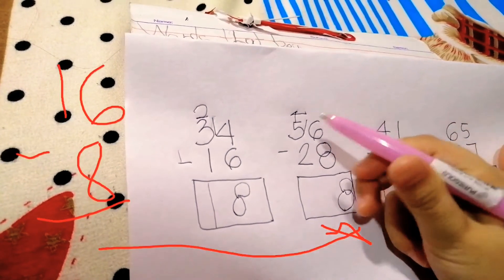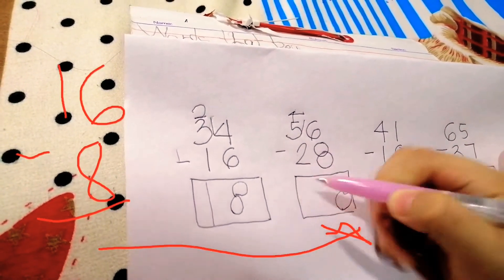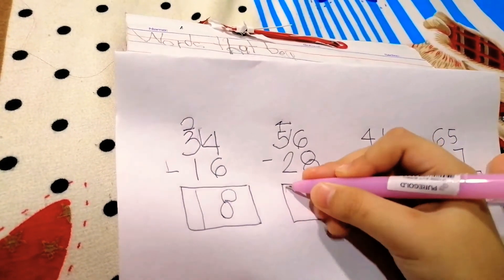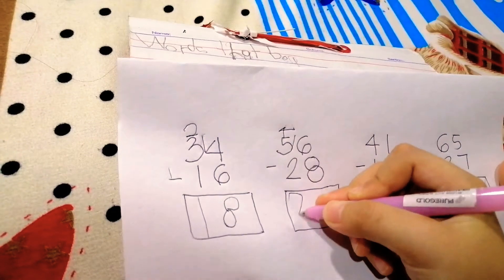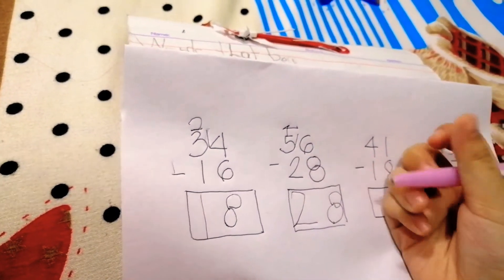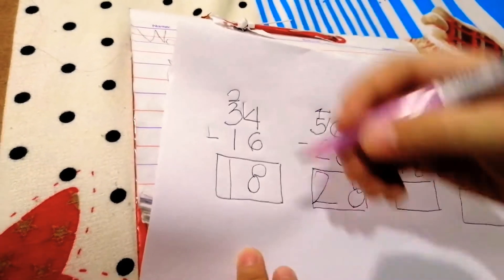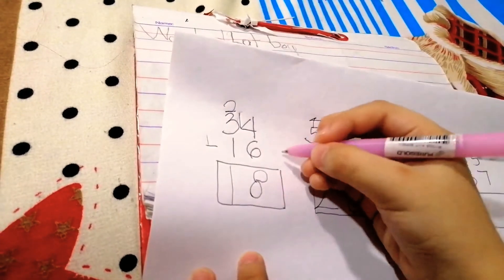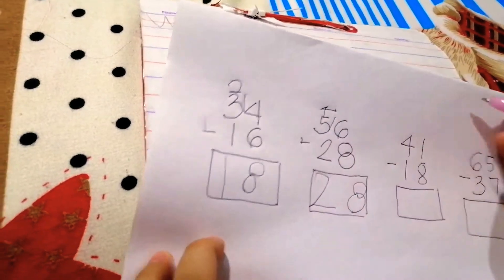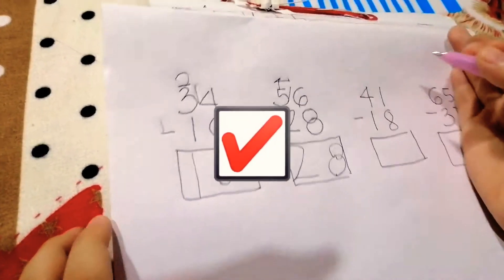Then 4 minus 2 equals 2. That's correct. Let me put 1 there. Next one.